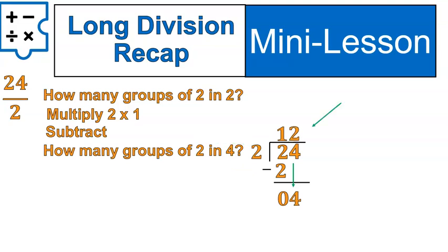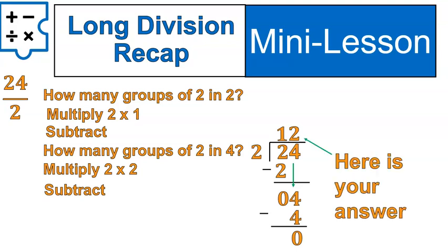Then, we bring this number down, and then we basically start over again. We ask ourselves, how many groups of 2 are there in 4? There's 2 groups of 2 inside of 4, or 2 twos inside of 4. Then, we will multiply 2 times 2, which gives us 4. 2 times 2, and that answer is going to go right down here. 2 times 2 is 4. We subtract and get 0.